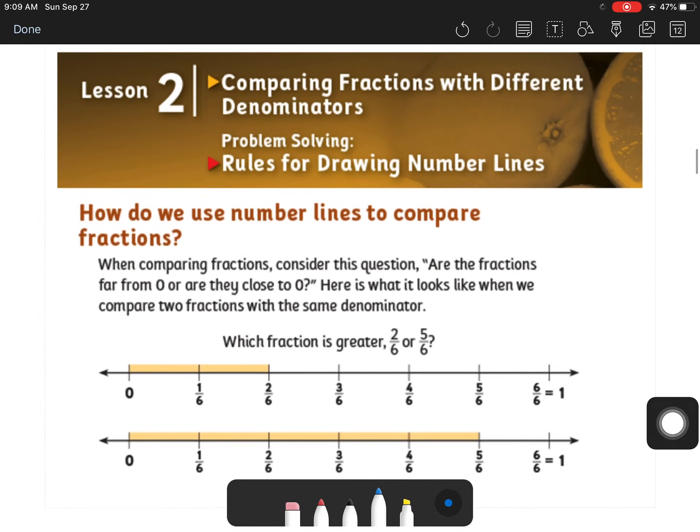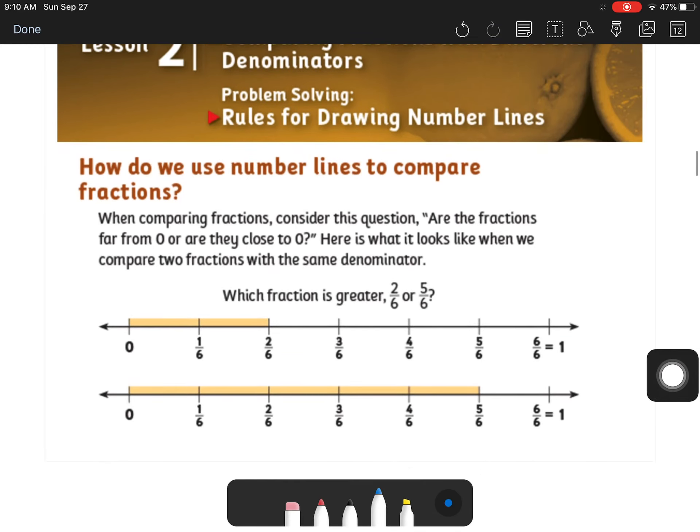All right, so on to today's lesson. It says we're going to be comparing fractions with different denominators. So which fraction is greater, 2/6 or 5/6? Well, that's pretty easy, because they have the same denominator. Obviously, 5/6 is greater than 2/6. And if they have the same denominator, that makes it a little bit simpler to tell.